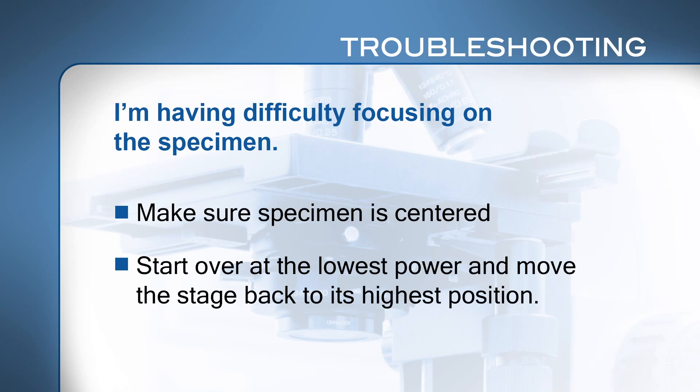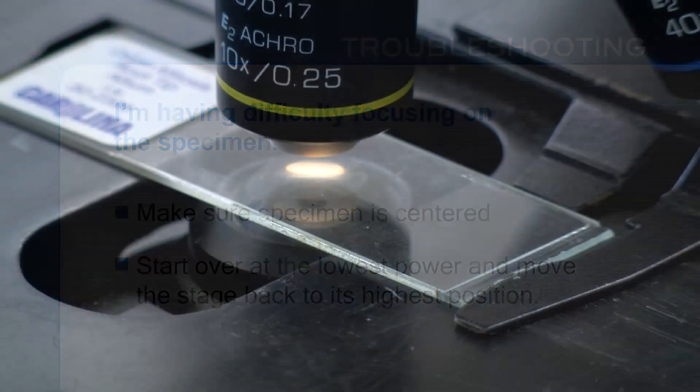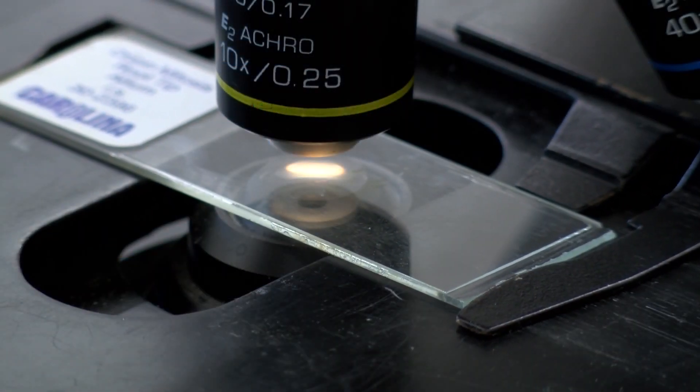Start over at the lowest power and move the stage back to its highest position. If you get frustrated trying to focus, you can easily get so far out of focus that it's easier to start over. You should only need to do minor adjustments at each magnification. When focusing, move the slide just a little bit back and forth with the slide holder knobs — your eyes can see motion better than stationary objects.